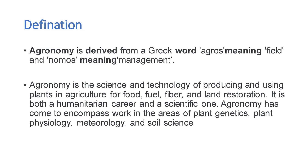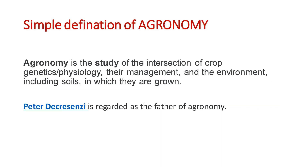Agronomy is the science and technology of producing and using plants in agriculture for food, fuel, fiber, and land. It is both a practical career and a scientific discipline. Agronomy has come to encompass work in the area of plant genetics, plant physiology, and more. In simple terms, agronomy is the study of the interaction of crops — their genetics, physiology, management — and the environment including soils in which they are grown.